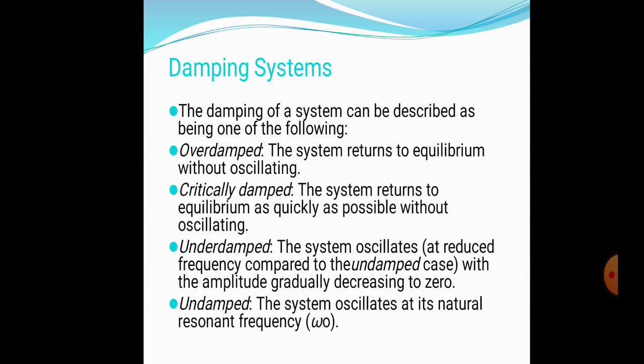The types of damping systems are: over-damped, critically damped, under-damped, and undamped. In an over-damped system, the system returns to equilibrium without oscillating. In a critically damped system, the system returns to its original position quickly without oscillating. In an under-damped system, there is progressive degradation of amplitude with some oscillations. In an undamped system, it oscillates at its natural frequency with no resistance.